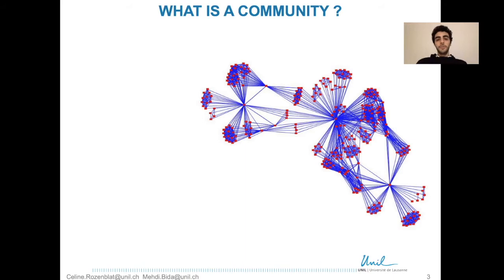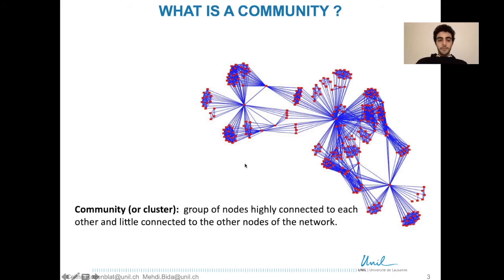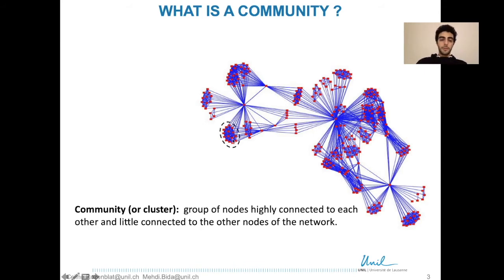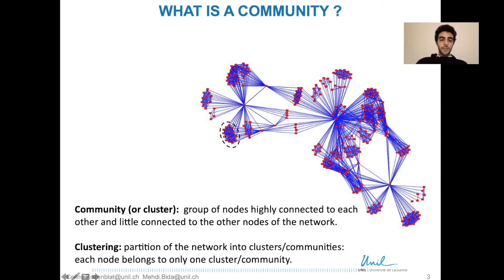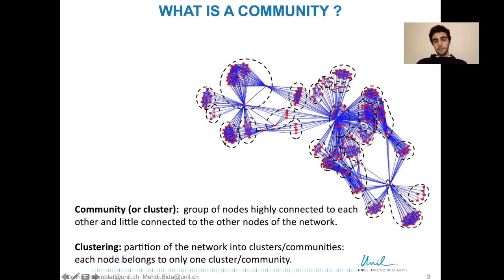So what is a community? A community is a group of nodes that are highly connected to each other, and little or less connected to the rest of the nodes of the network. For example, here is a community. And what is a clustering? A clustering is a partition of the network into clusters or communities — that is, each node belongs to only one cluster or community, like this.